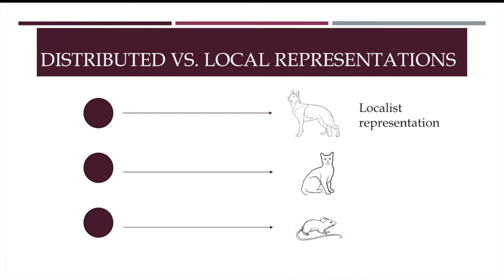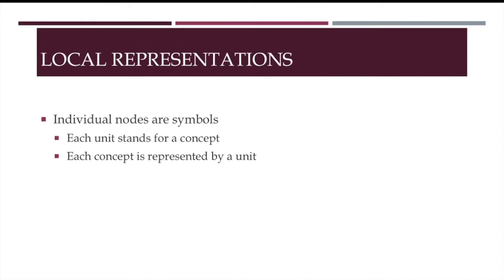This is what is called a localist representational scheme. In localist representation, individual nodes are symbols. So, each unit stands for a concept, or individual, or whatever it is that is being represented. And each relevant concept is represented by a unit. So, this just means that units are meant to fire always and only when presented with instances of what they are supposed to represent. So, here we have a one-to-one correspondence between the relevant nodes and what is being represented by them.